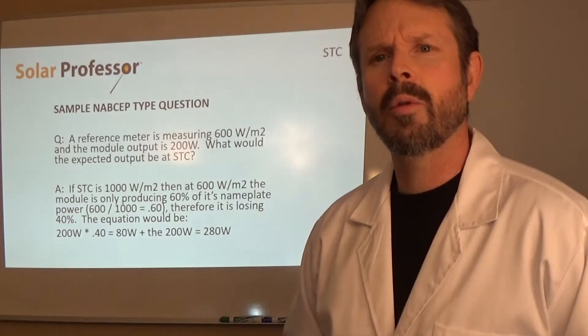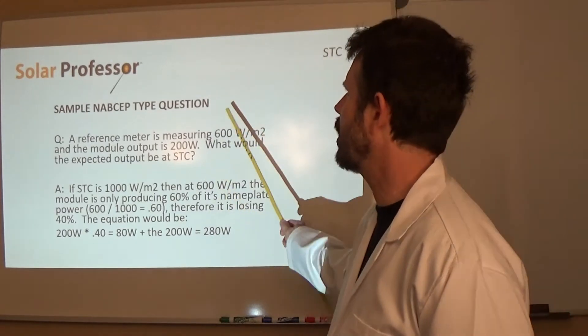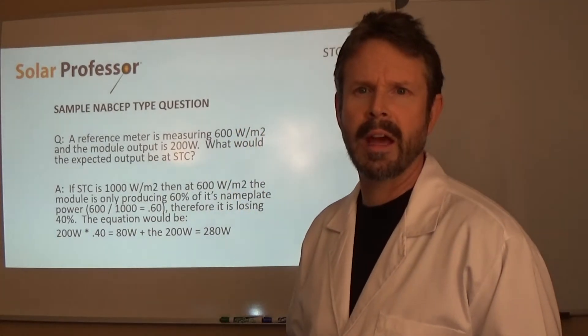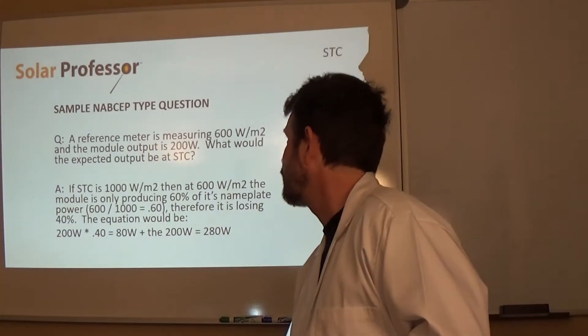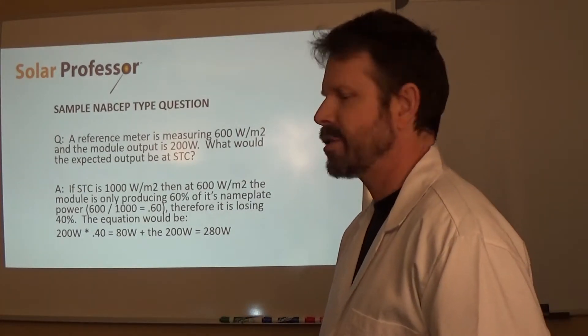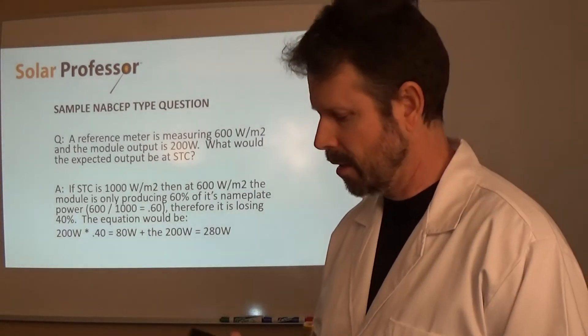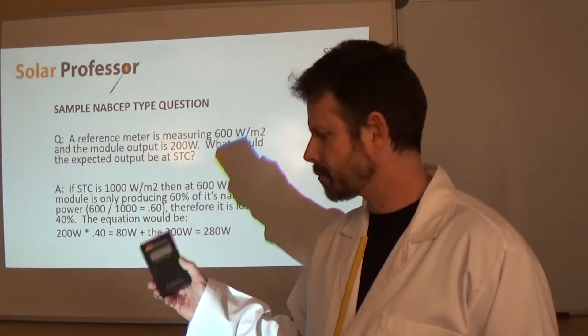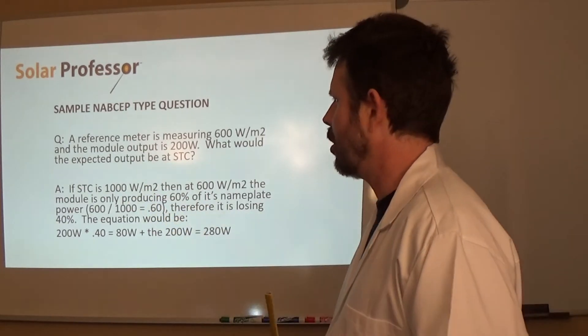I want to close really quickly, and I'd like to do this in some of the other videos that I'm going to do for NABCEP preparation, is do a quick sample type question that you might see on the NABCEP exam. And here it goes. A reference meter is measuring 600 watts per meter squared, and the module output is 200 watts. What would the expected output be at standard test conditions? So, that's the reference meter right here. It's reading 600 watts. Don't worry about the time of day right now. Here's how the answer goes.